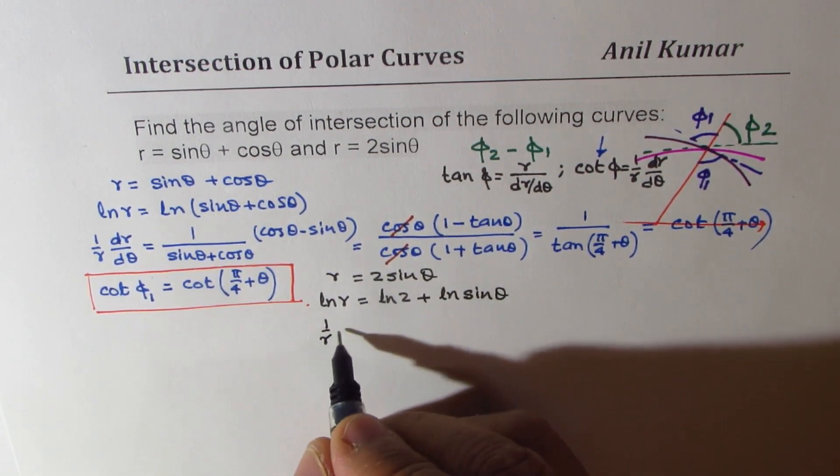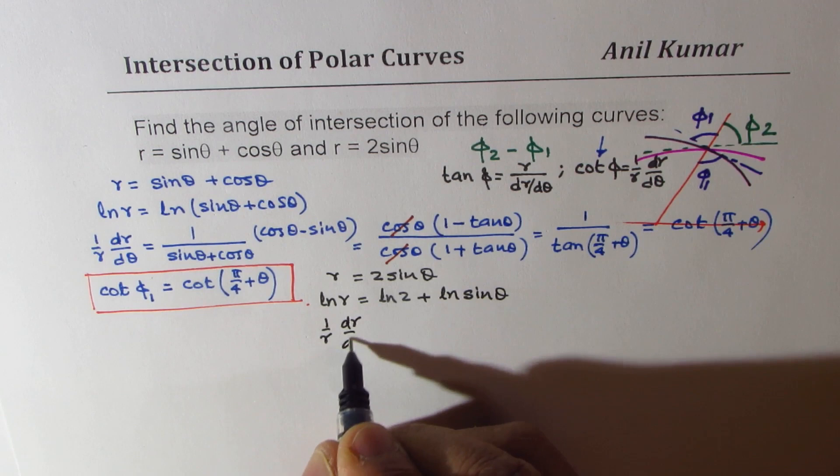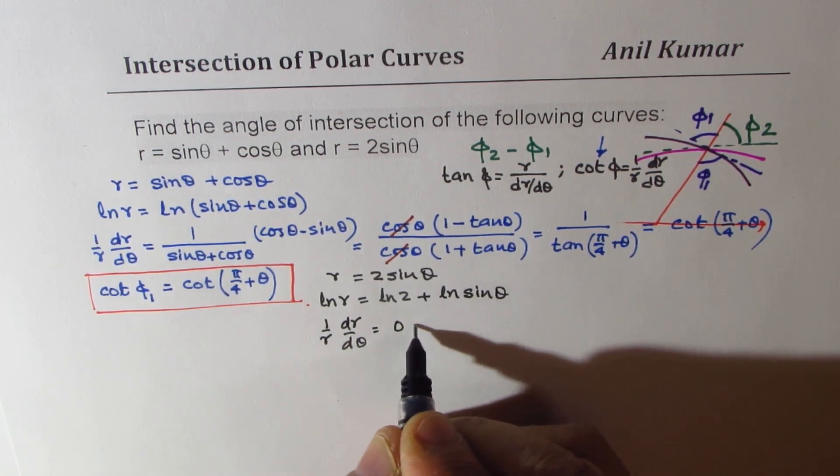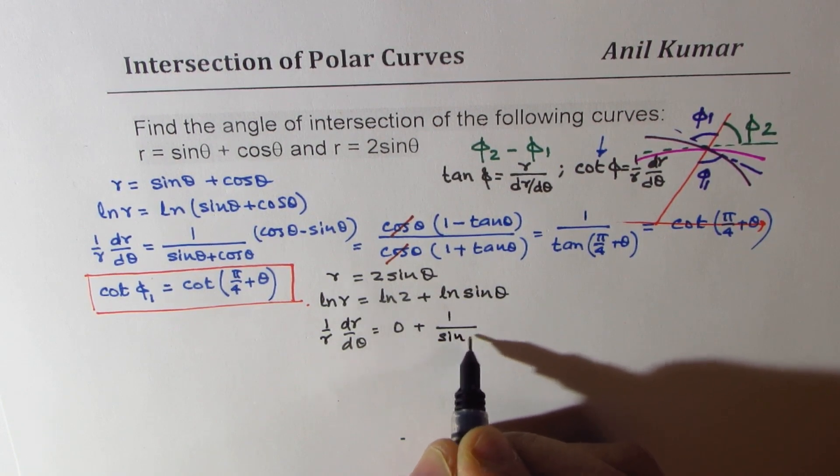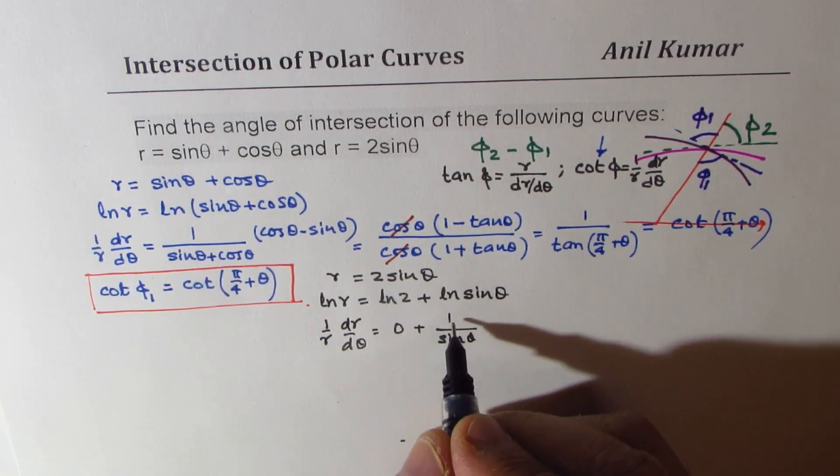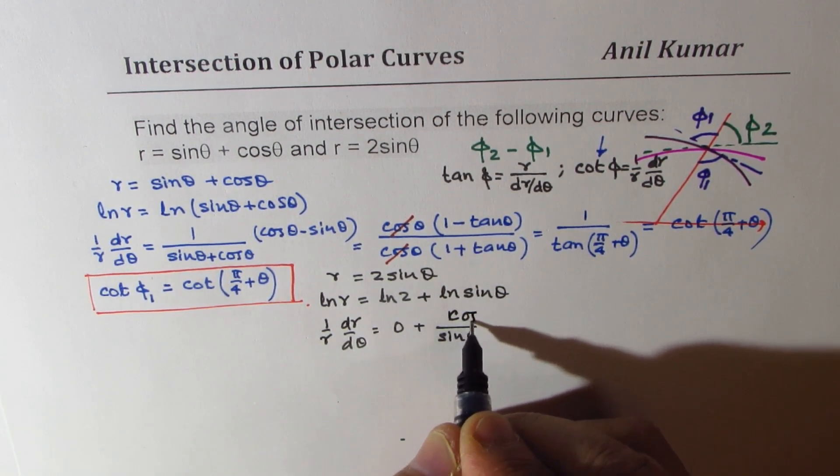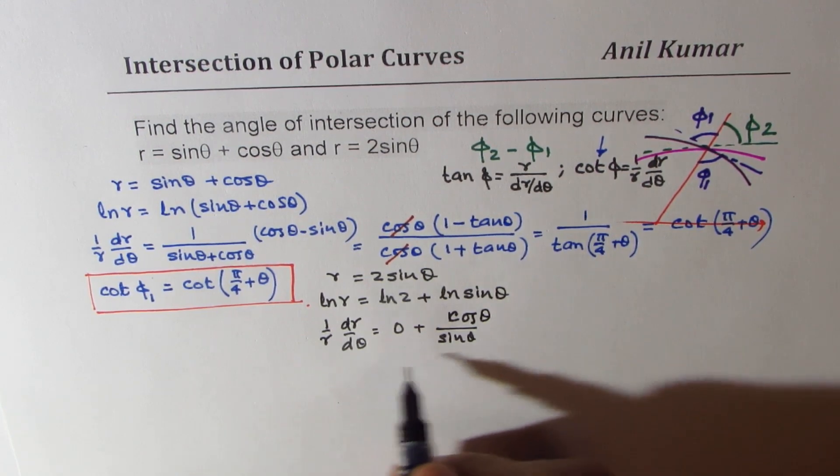Differentiating, we get 1 over r dr d theta equals 0 plus 1 over sine theta. Derivative of sine theta is cosine theta, let me write here.